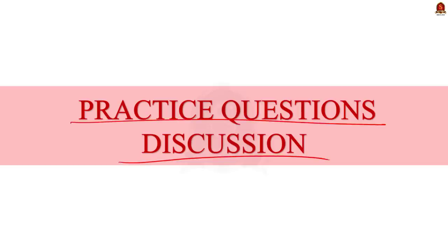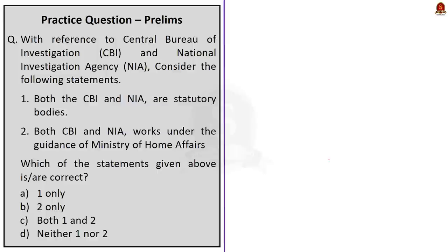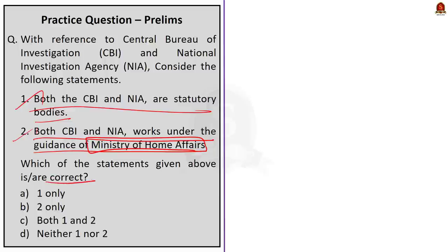Now look at this first question. With reference to Central Bureau of Investigation and National Investigation Agency consider the following statements. Statement 1. Both the CBI and NIA are statutory bodies. Statement 2. Both the CBI and NIA works under the guidance of Ministry of Home Affairs. Which of the statements given above is or are correct? Option A one only. Option B two only. Option C both one and two. And option D neither one nor two.